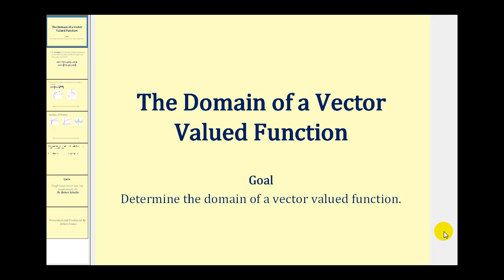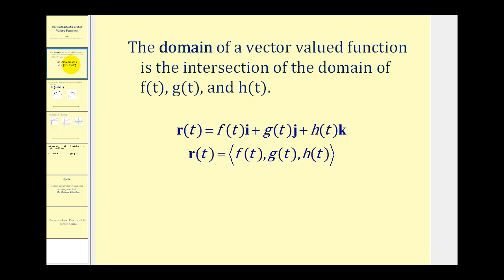Welcome to a video on how to determine the domain of a vector-valued function. The domain of a vector-valued function is the intersection of the domain of f(t), g(t), and h(t), when the vector is expressed as a sum of the unit vectors i, j, k, or expressed in component form. If the vector-valued function only has two components — the x component and the y component — we'll only be looking for the intersection of f(t) and g(t). Let's take a look at a couple of examples.